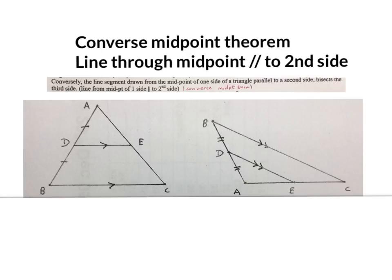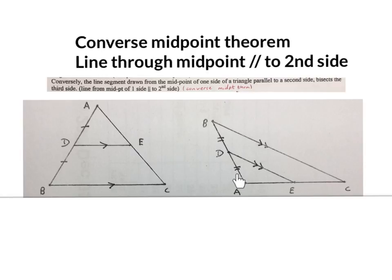Looking at the sketch, we have a triangle again. If I get the midpoint of one side of the triangle and I draw from there a line parallel to the second side, the third side will be bisected. Again, if I have a triangle, I get the midpoint of one side and draw from there a line parallel to the second side — that line will bisect the third side.